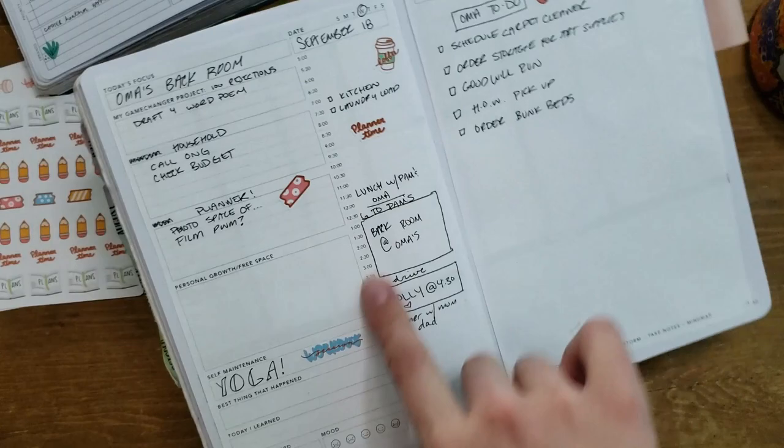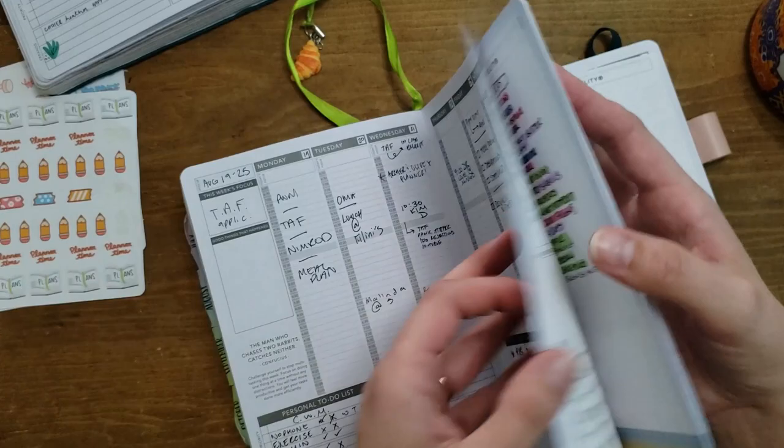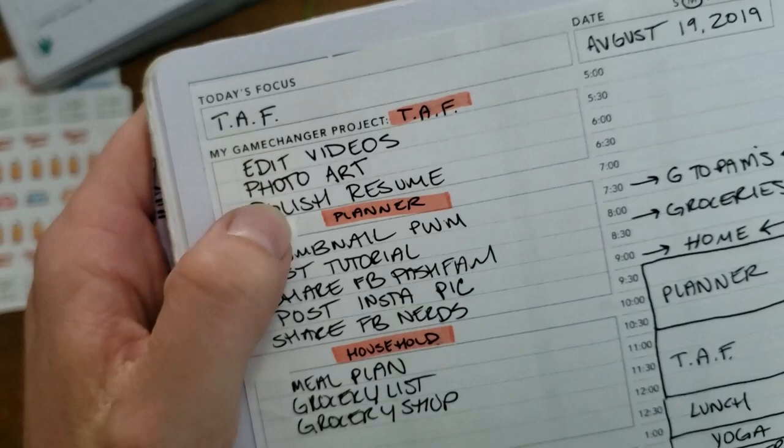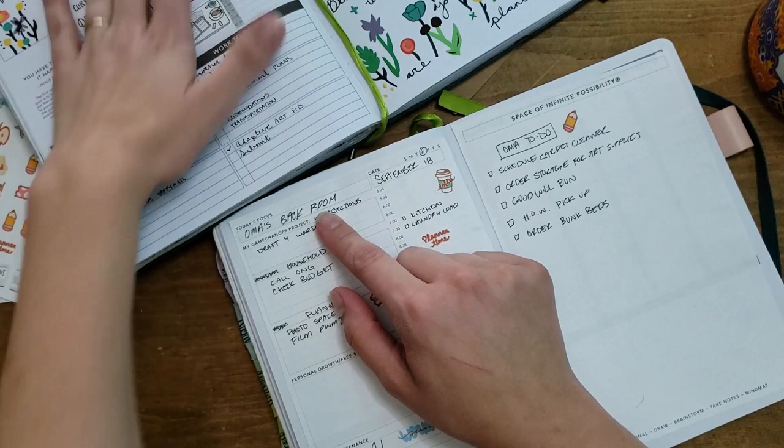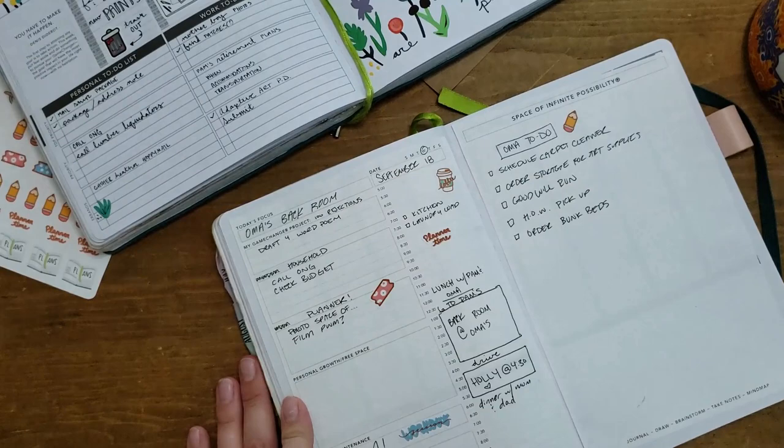And I really like that it's got the game changer project. Real talk here. Anyway yeah so it was really nice to have that specific game changer project space to remind myself of what I was actually focusing on. The Today's Focus is nice and big which I like and it easily translates from the weekly spread to this and then you can fill in the date, put the day of the week, things like that.